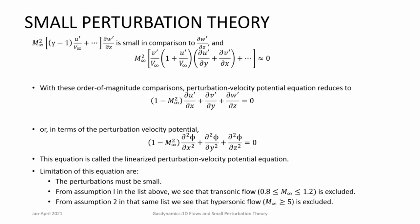With this approach, the perturbation velocity potential reduces to: (1 - M∞²)(∂u'/∂x) + ∂v'/∂y + ∂w'/∂z = 0, which is much simpler. Not only is it simpler, it is also linear — M∞ is a constant for a given problem. So this is the linearized perturbation velocity potential equation, applicable for very small perturbations.